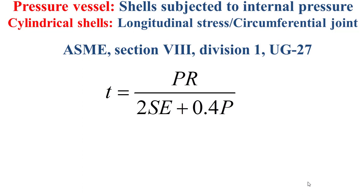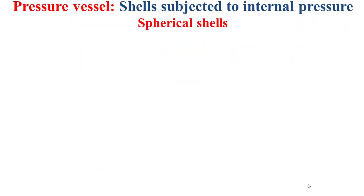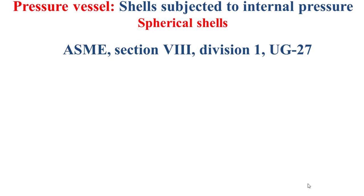P, R, S, and E are defined as explained before for the cylindrical shell dominated by circumferential stress. This formula is valid only when the thickness does not exceed half of the internal radius of the shell, and the pressure does not exceed 1.25 × S × E. For the case of spherical shells, the thickness should be obtained based on ASME Section 8 Division 1, UG-27, using the formula shown.